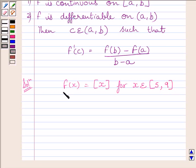Now we know, the given function is not continuous at all integer points. So we can say, f(x) equals greatest integer of x is not continuous for x belonging to closed interval [5, 9].